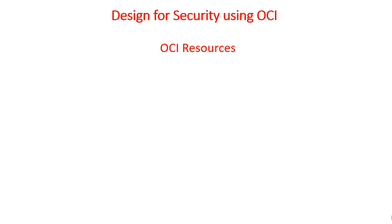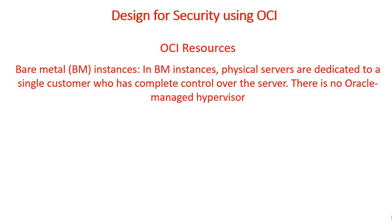Now, how do OCI resources help with security? For bare metal instances, physical servers are dedicated to a single customer who has complete control over the server. There is no Oracle-managed hypervisor, and no Oracle personnel have access to memory or local NVMe storage while the instance is running. All network virtualization is performed off-box, and only the Oracle Integrated Lights Out (ILOM) is used — it can only start and stop the server and does not have access to the data. When you terminate a bare metal instance, it goes through a process of wiping out the data from that server.